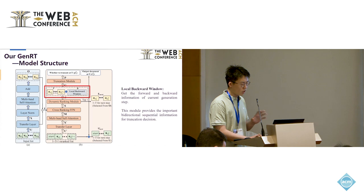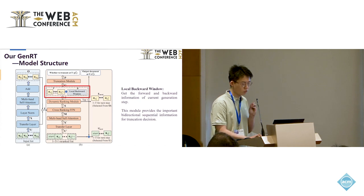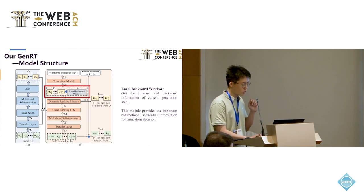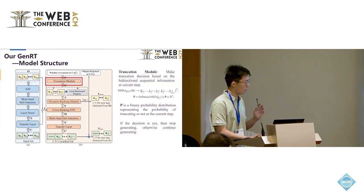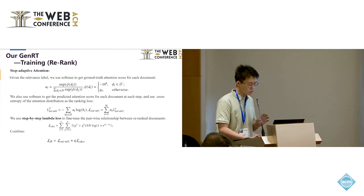Now, we will perform truncation. However, the truncation decision needs to be based on the bidirectional sequential information, but the autoregressive generation can only provide the forward information at each generation step. To solve this, we introduce the local backward window. It uses a strategy to select key documents behind the current step from the dynamic ranking list as the backward information of the current step. In this way, the truncation model can get the bidirectional information at the generation step. It can make the truncation decision based on this. It is actually a single layer transformer with positional embedding. For each step, it predicts a binary probability distribution representing the probability of truncating or not at the current step. If the truncation is yes, then stop generating, otherwise continue generating.